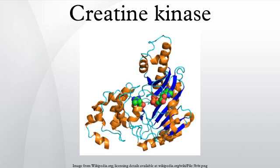Creatine kinase, also known as creatine phosphokinase or phosphocreatine kinase, is an enzyme expressed by various tissues and cell types. CK catalyzes the conversion of creatine and consumes adenosine triphosphate (ATP) to create phosphocreatine (PCr) and adenosine diphosphate (ADP).